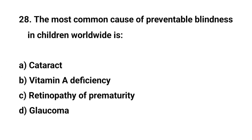Question No. 28. The most common cause of preventable blindness in children worldwide is? The right answer is B: Vitamin A deficiency.